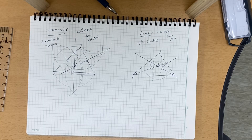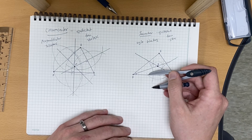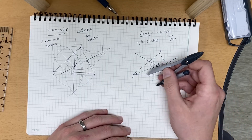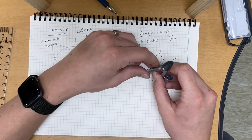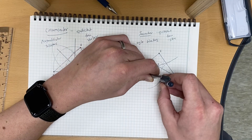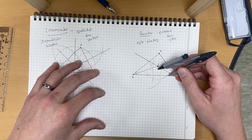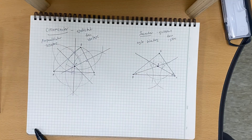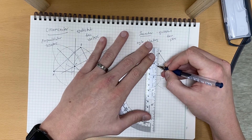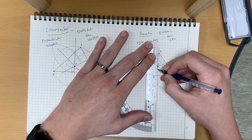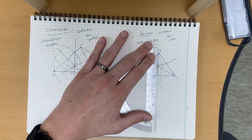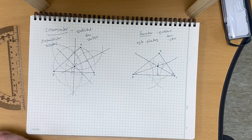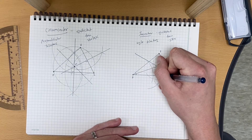Now we put our needle at one of the intersections and draw a small arc below, then put the needle at the other intersection and draw another arc. Now we draw our line from point P through this intersection — only to right there — and that gives us our perpendicular line, not a perpendicular bisector, just a perpendicular line.